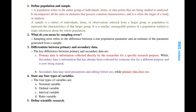Differentiate between primary and secondary data. Primary data is information collected directly by the researcher for a specific research purpose, while secondary data is information that has already been collected by someone else for a different purpose and is now being reused. Secondary data may need precautions and editing before use, while primary data does not.